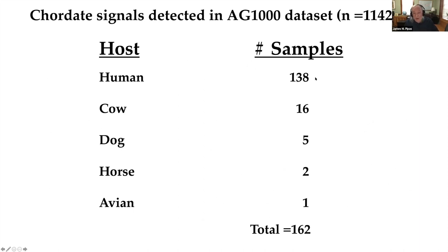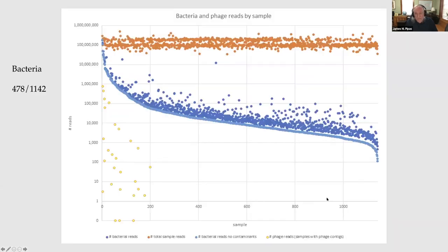For viruses, we detected viral sequences in 223 of 1,142 samples, but most were contamination that we had to eliminate manually. However, 19 out of 1,142 samples contained authenticated eukaryotic viral sequences — not arboviruses, but viruses that grow in other eukaryotes. Fifteen of those 1,142 samples contained hepatitis B virus. HBV goes to high viremia in humans, and all 15 of these samples were blooded with humans — containing human sequences. The HBV substrain isolated was substrain E, which circulates in Africa where the mosquitoes were collected, not a Western or British strain. We achieved almost complete coverage of the hepatitis B genome in some samples.